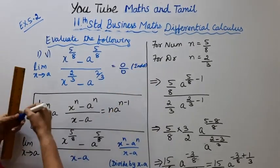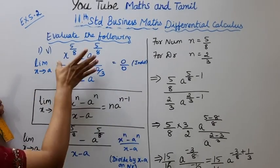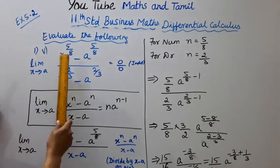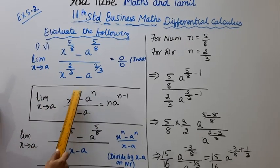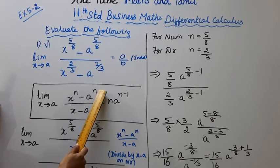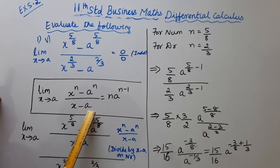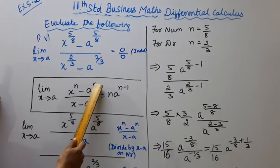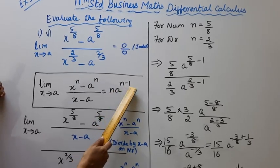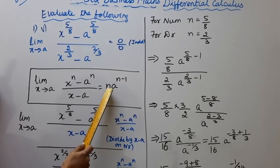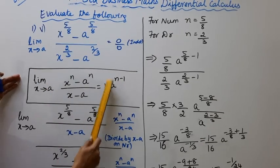Direct substitution gives us 0 by 0. But in the 4th sum there's a formula: Limit X tends to A, X power n minus A power n divided by X minus A. When there's a power, we use this formula: X power n minus A power n divided by X minus A equals n times a power n minus 1. Now compare the indeterminate sum to this formula.